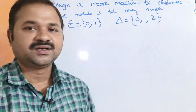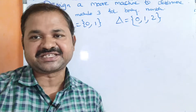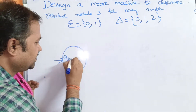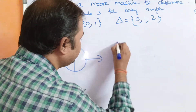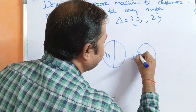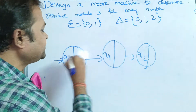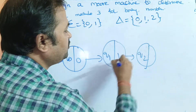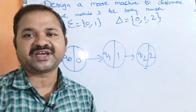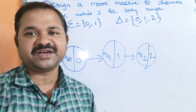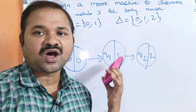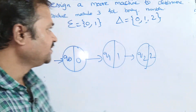Since we have 3 output symbols, we require 3 states. The first state is Q0, the second state is Q1, and the next state is Q2. The output of Q0 is 0, the output of Q1 is 1, and the output of Q2 is 2. Now we have to make this a DFA, meaning each state must have transitions for every symbol in the alphabet — both 0 and 1.